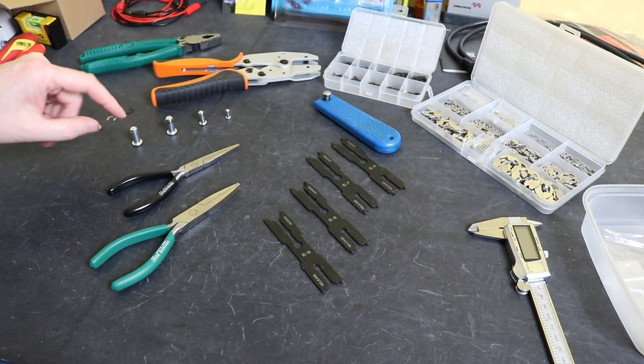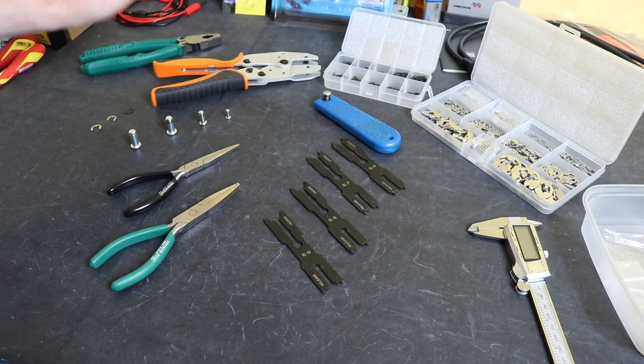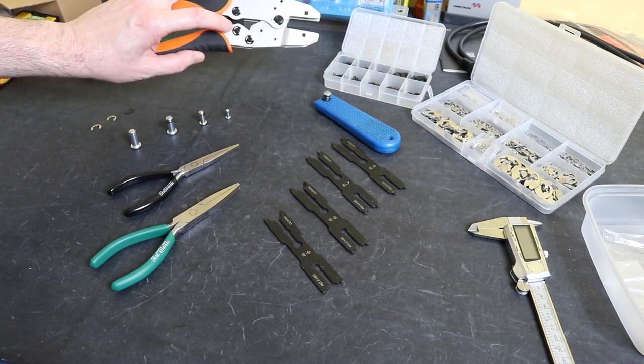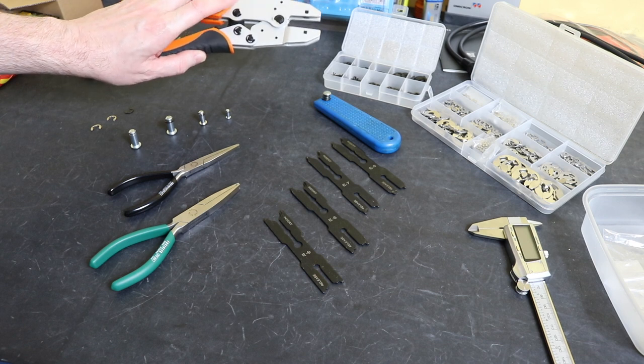We have a number of clevis pins here with some of the E-clips around, and they're also in this ratchet crimper frame. You can see the E-clips around the pivot pins there.